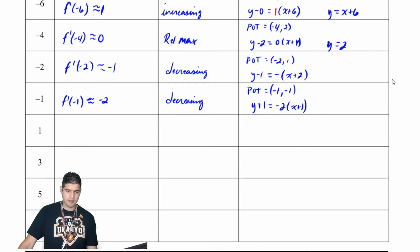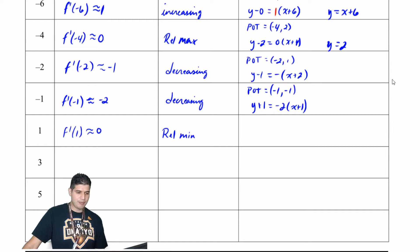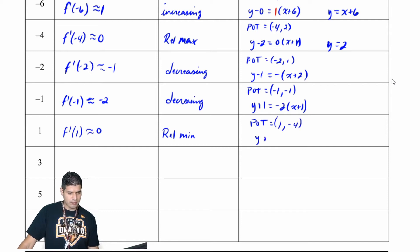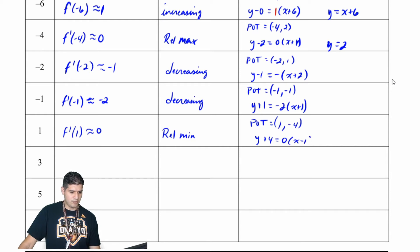At x equals 1, f prime of 1 is approximately 0 and we have a relative minimum. My point of tangency is 1 comma negative 4, so the equation is y plus 4 equals 0 times x minus 1, which simplifies to y equals negative 4.